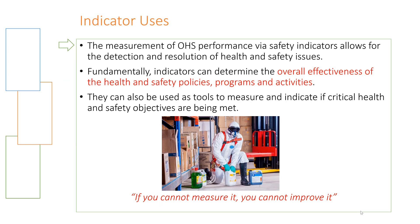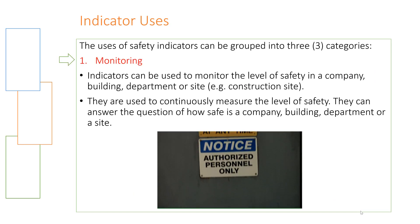There are several uses of indicators. The primary use is for the detection and resolution of health and safety issues — we use them to determine the state or level of safety a company is currently experiencing. Fundamentally, indicators can determine the overall effectiveness of health and safety policies, programs, and activities, and can also be used as tools to measure whether critical health and safety objectives are being met.